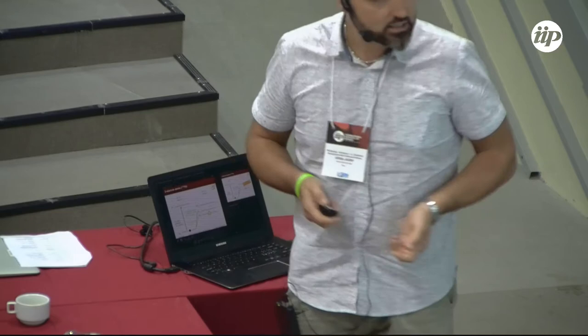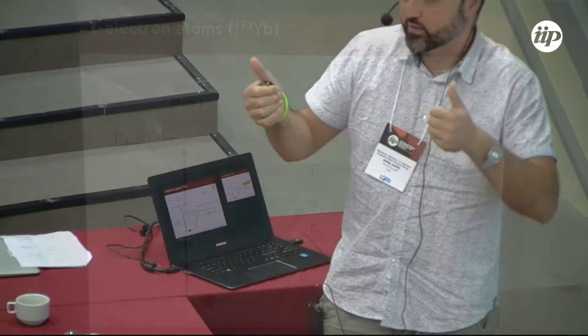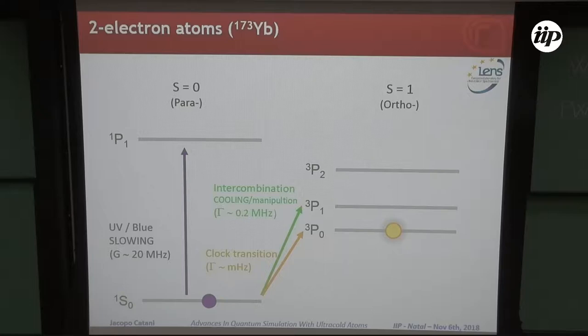Two-electron atoms just feature two electrons in the outer shell, which can couple with zero or one spin. This gives rise to a typical helium-like level structure where you have two independent level sets, more or less.